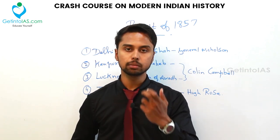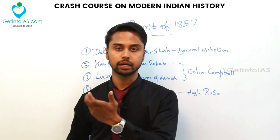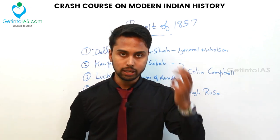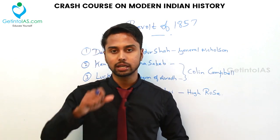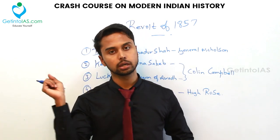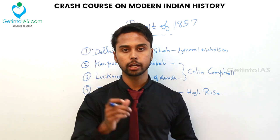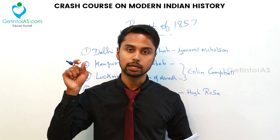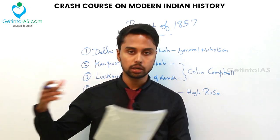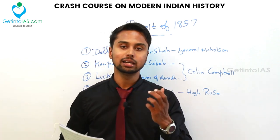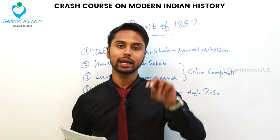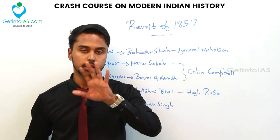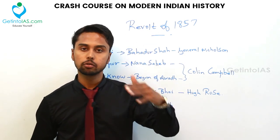The immediate military cause was the greased cartridge — a bomb-like thing you had to bite to use. The grease was made of fat from pig and cow, which affected both Hindus and Muslims. The British had again touched religious sentiments. All these causes combined and finally resulted in the famous Revolt of 1857.